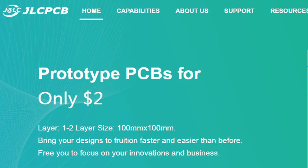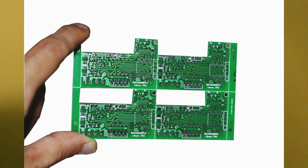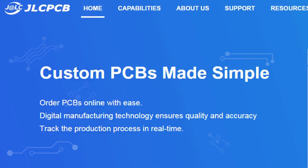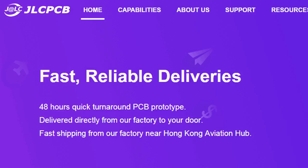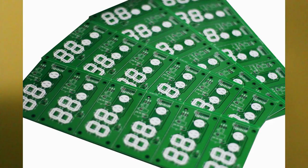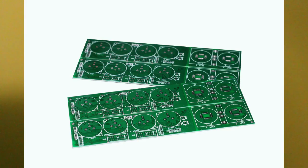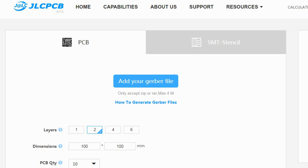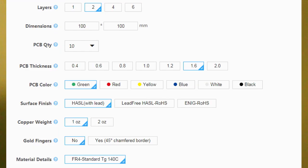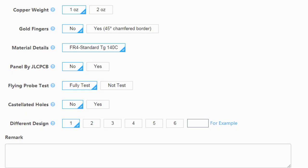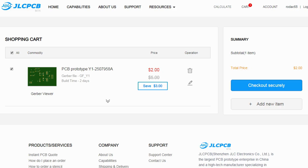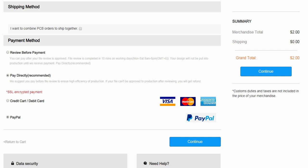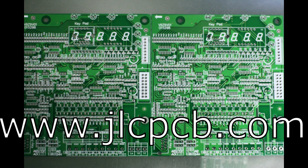This video is sponsored by JLCPCB. JLCPCB is a company that makes excellent quality PCBs at an unbeatable price. You can order boards online in minutes. After registration, upload your Gerber files, select the PCB properties, select the payment method and place your order. Best price and quality for all your PCB needs.